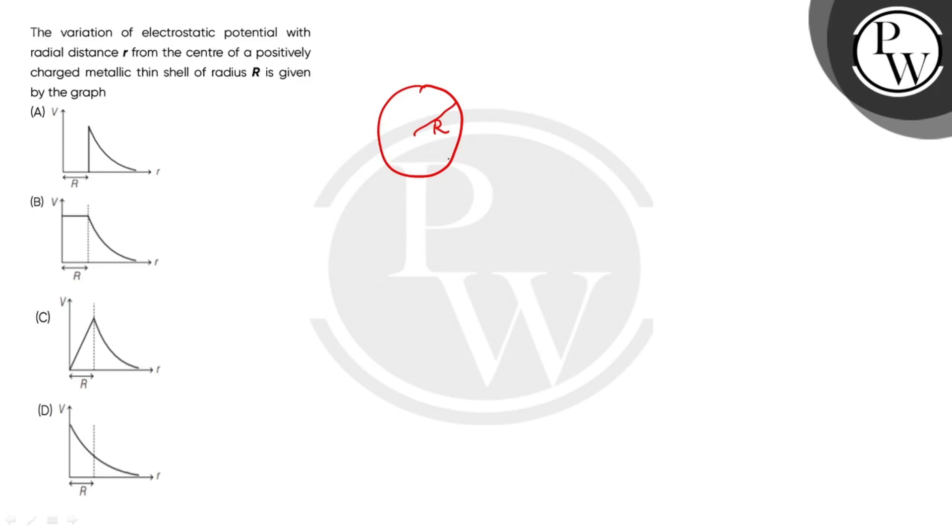We know the potential inside the thin metallic shell is constant and given by 1 by 4πε₀ q by R, where we have charge q and radius R.